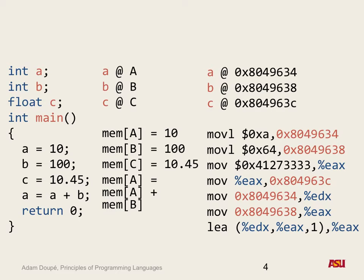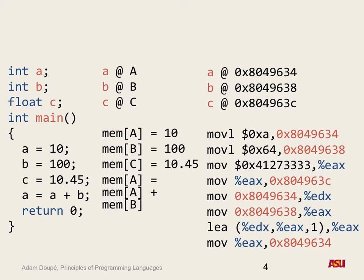We're not done after the calculation — we need to save it back to memory. Even though we calculated A plus B, we haven't completed the semantics — we have to put that value back in that location. So the instruction is: move EAX into 0x804 9634. Interestingly, on CentOS 7 with a newer GCC, this LEA instruction was changed to an ADD instruction.